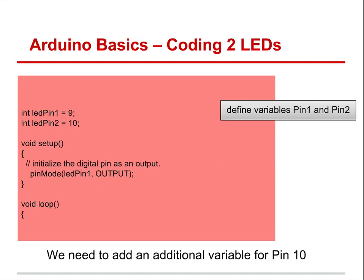Going back to this again — we set up LED pin 1 and LED pin 2 at pins 9 and 10, and initialize them as outputs. With one variable we set LED pin 1 to pin 9. To add a second variable for pin 2: integer LED pin 2 equals 10. Under pin mode, I have pin mode LED pin 1 output — but what about LED pin 2? How would you define that as an output and put it in the loop? Take a minute, pause, and try to figure it out.